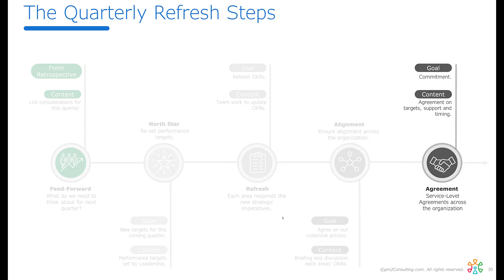The second phase takes about a week — from when we get the feed forward to when we've got agreement. In a typical organization, we should have the retrospective within two or three days of the end of the quarter, and this refresh should happen within a week to a week and a half. Many organizations can compress this — retrospective two days after, refresh two days after that, so within the first week we're reset. Part of it is knowing this isn't precise; all we're trying to do is get directionally correct so we can get launched and aligned. The longer the elapsed time, the more thinking and expense you'll have to set the new objectives.